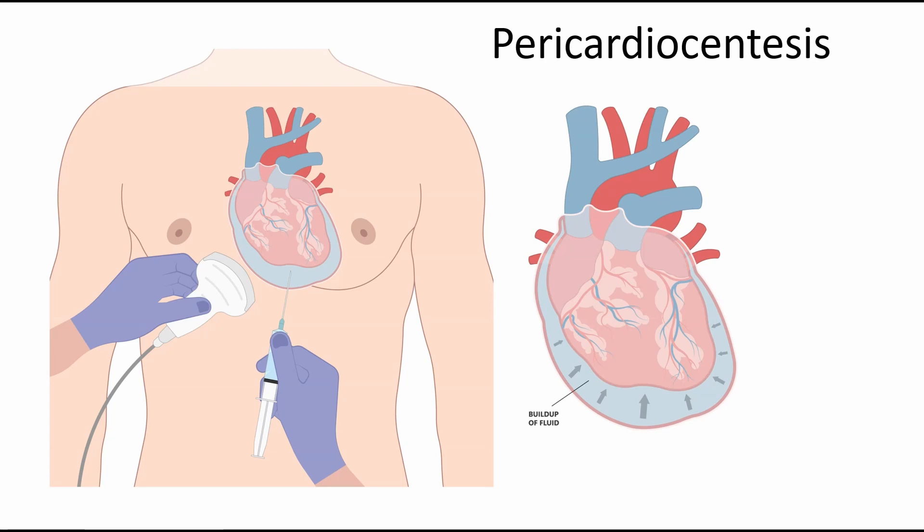The treatment for cardiac tamponade is a pericardiocentesis. Pericardiocentesis occurs when they stick a needle into that pericardial sac and pull out the fluid. In some cases, they will put a catheter in and continue to drain the fluid over a longer period of time.